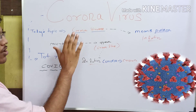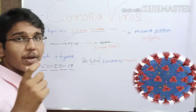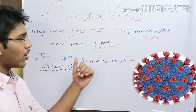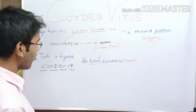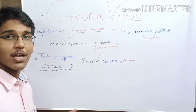Now let us talk about the reason behind the name 'corona.' When coronavirus is viewed under a microscope, the microscopic view of the coronavirus looks like a crown. In Latin, 'corona' means crown, so they kept the name corona for this family of viruses. We can see the crown has some spicule-like structures, and the coronavirus also has spicules all over its body, so based on this fact it got its name.